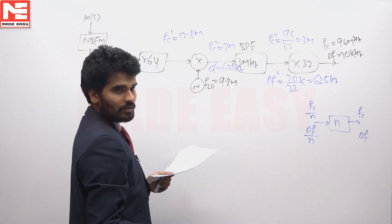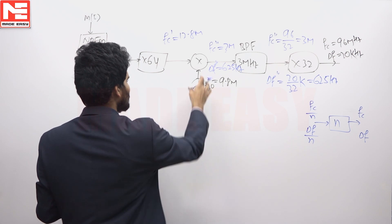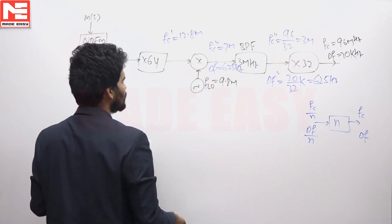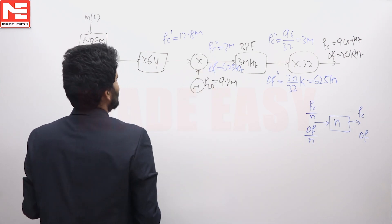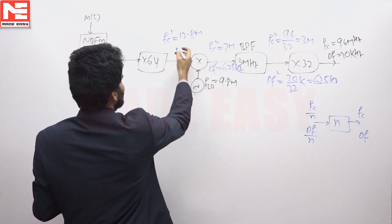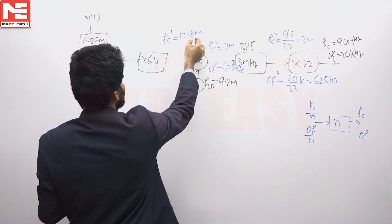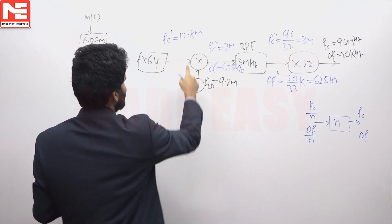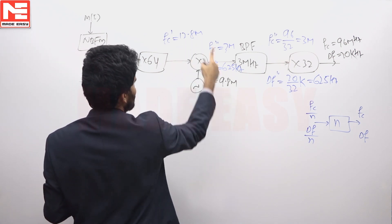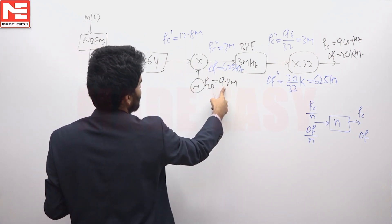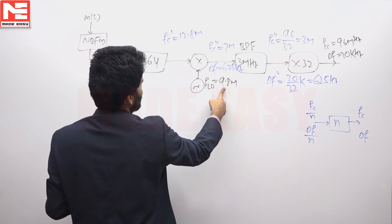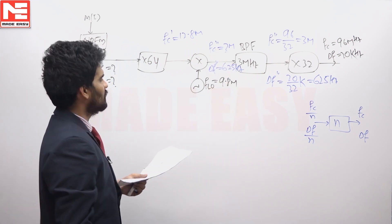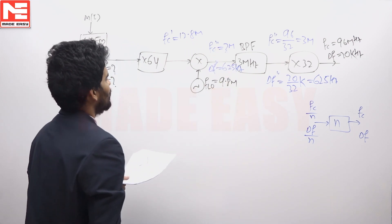Since down conversion is performed, the carrier frequency before the mixer must be 12.8 MHz. Then 12.8 MHz minus 9.8 MHz equals 3 MHz, confirming the down conversion result.